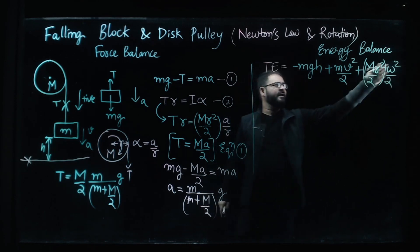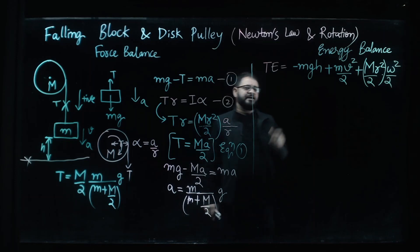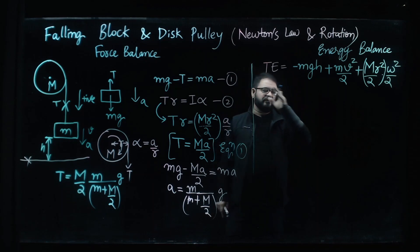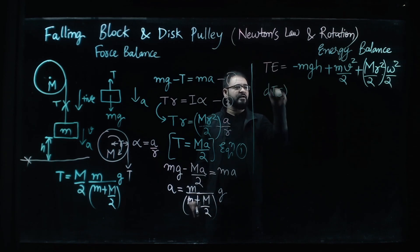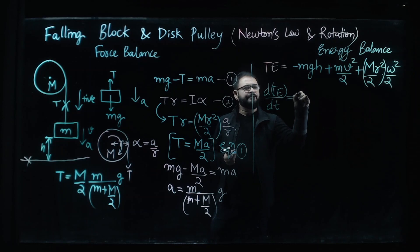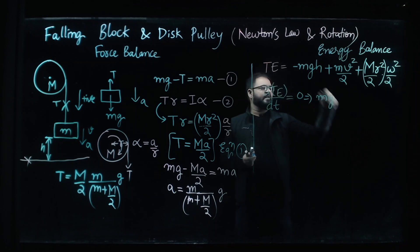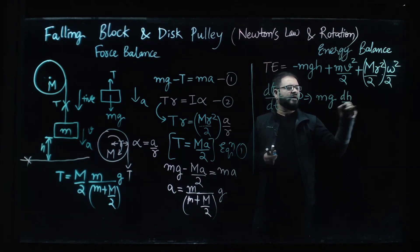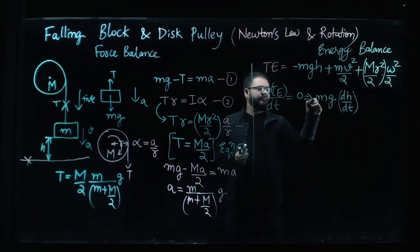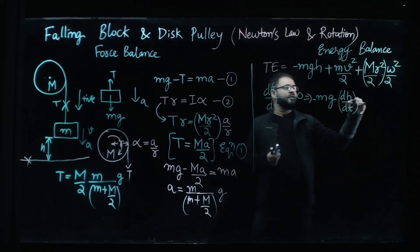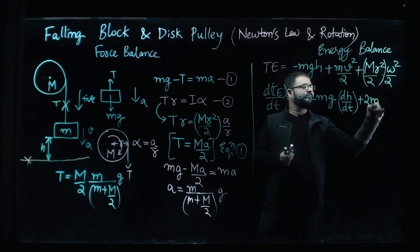Now if we have the total energy what we can do is just take derivative of the total energy because total energy is always conserved so we know the derivative of total energy is going to be constant with respect to time. This is to say energy is conserved and we only have gravitational potential energy and the kinetic energy. So let's rewrite: minus mg dh by dt plus twice mv dv by dt.